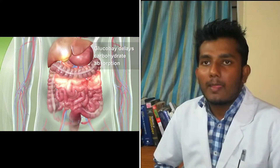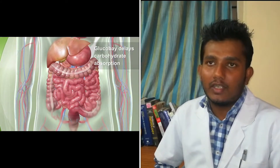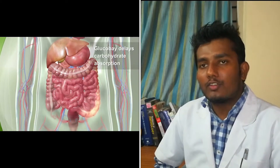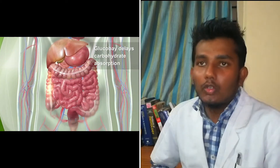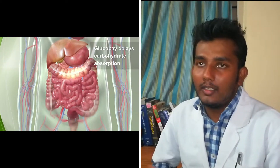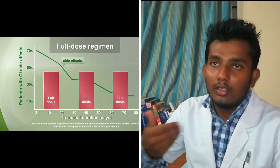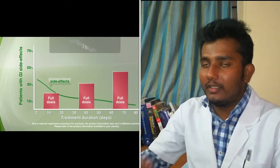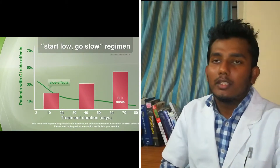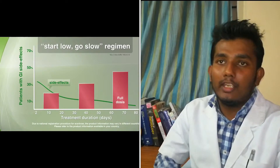Acarbose has a unique mode of action where it shifts glucose from the upper to the lower intestine, which causes gastrointestinal side effects. To reduce these side effects, doctors normally start the drug from a lower dose, then gradually increase it to the full dose. This approach helps to reduce the gastrointestinal side effects.